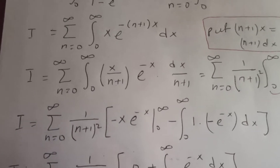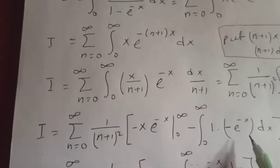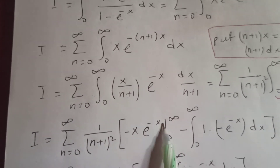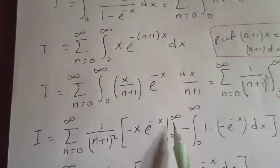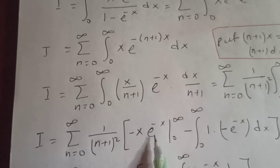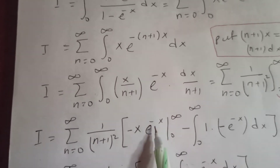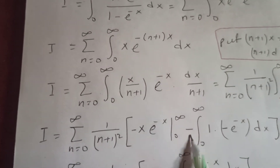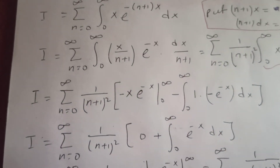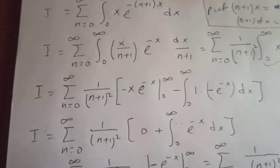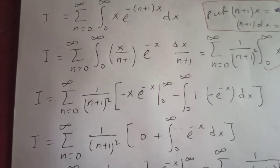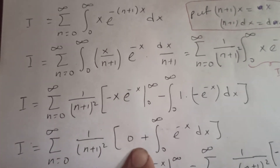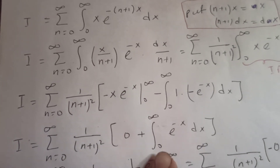Putting in the limits: at infinity, e^(−∞) is zero, and at x=0, x itself is zero, so the boundary term vanishes entirely. We then have I equal to the sum from n equal to 0 to infinity of 1 over (n+1)² — plus the remaining integral of e^(−x).